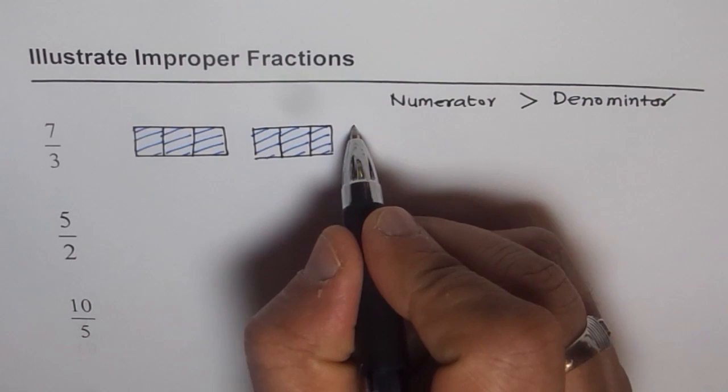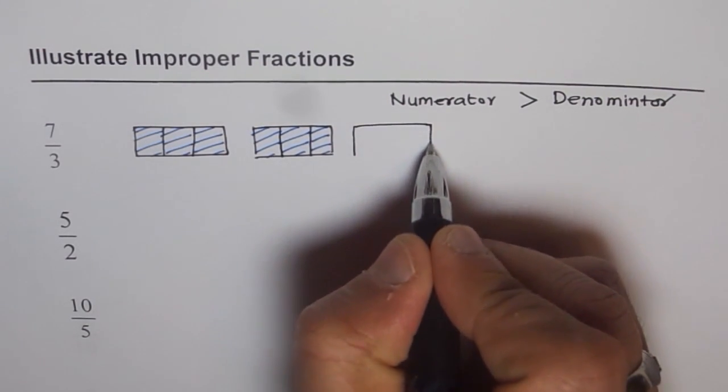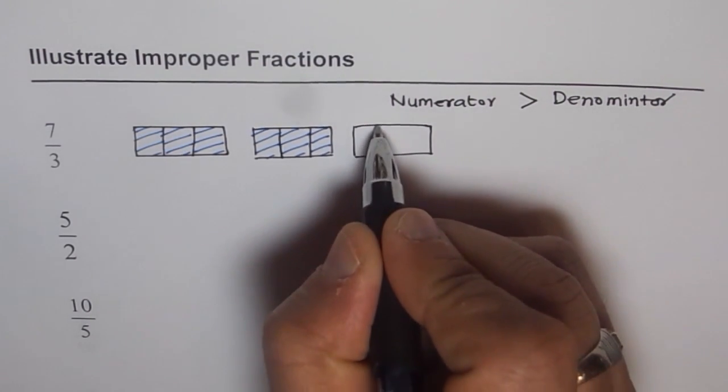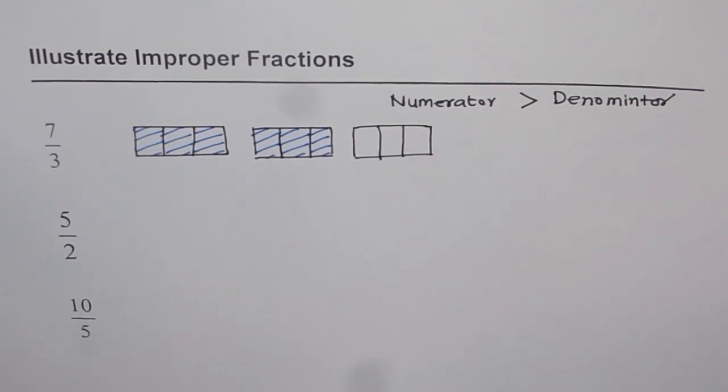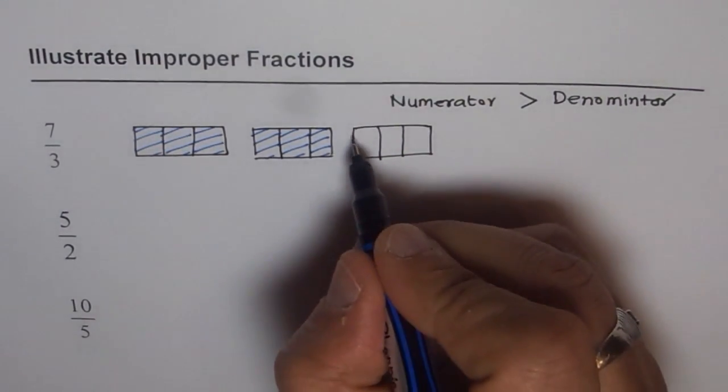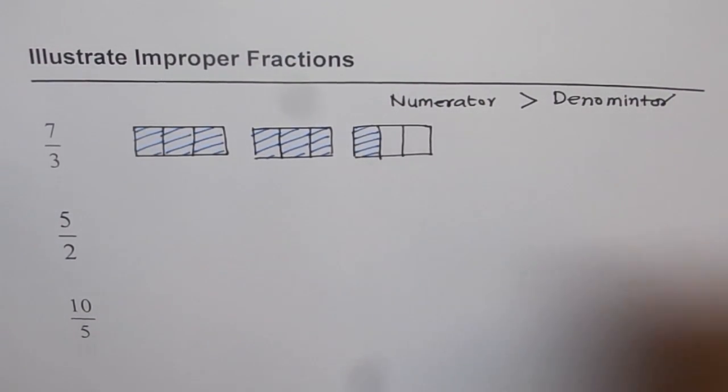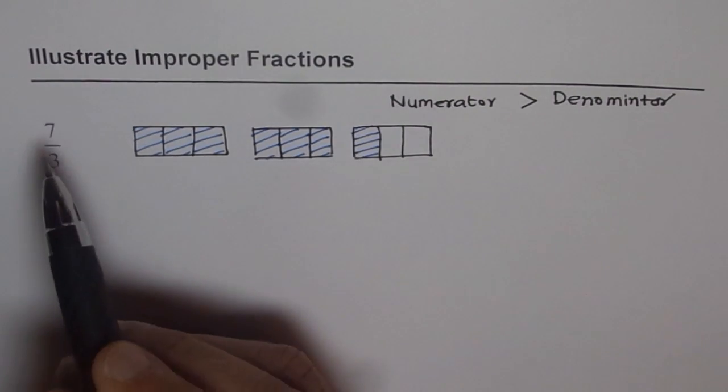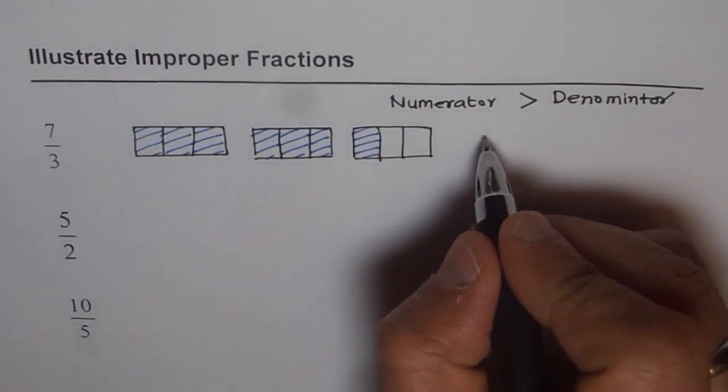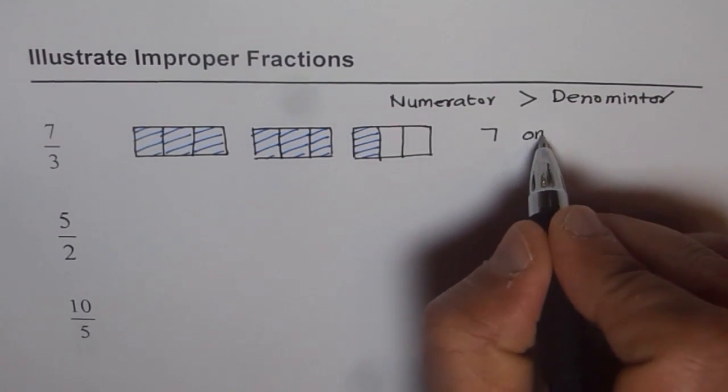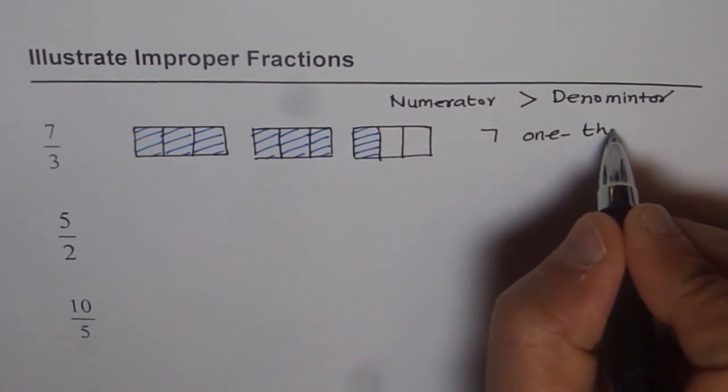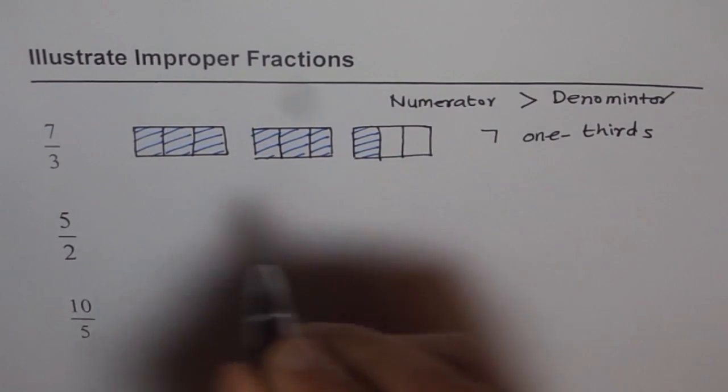Then let me draw one more rectangle, and then again divide it into 3 equal parts and color one more. So that becomes 7 one-thirds. So when I say 7 over 3, I mean 7 one-thirds.